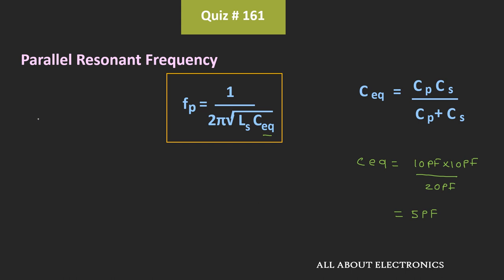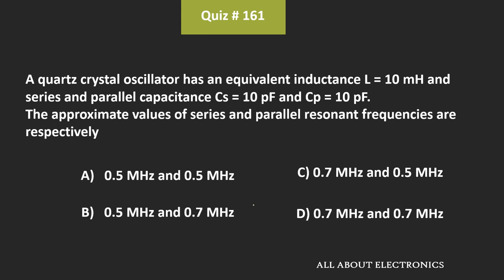Here, the value of L is equal to 10 mH. If we put the values of L and C equivalent in this expression, then the approximate value of this parallel resonant frequency is equal to 0.7 MHz. In this way, the value of the series resonant frequency is equal to 0.5 MHz and the value of the parallel resonant frequency is equal to 0.7 MHz. That means for the given question, B is the correct answer.